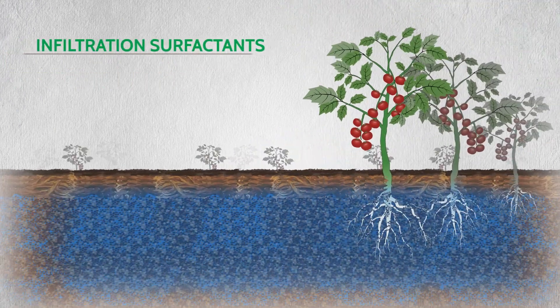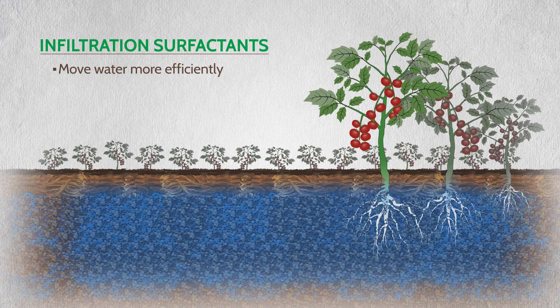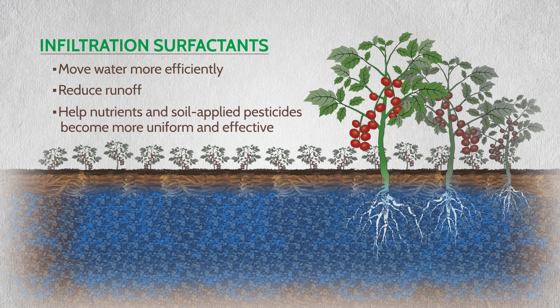As water treated with an infiltration surfactant moves more efficiently into the soil, runoff is reduced and nutrients and soil-applied pesticides become more uniform and effective.